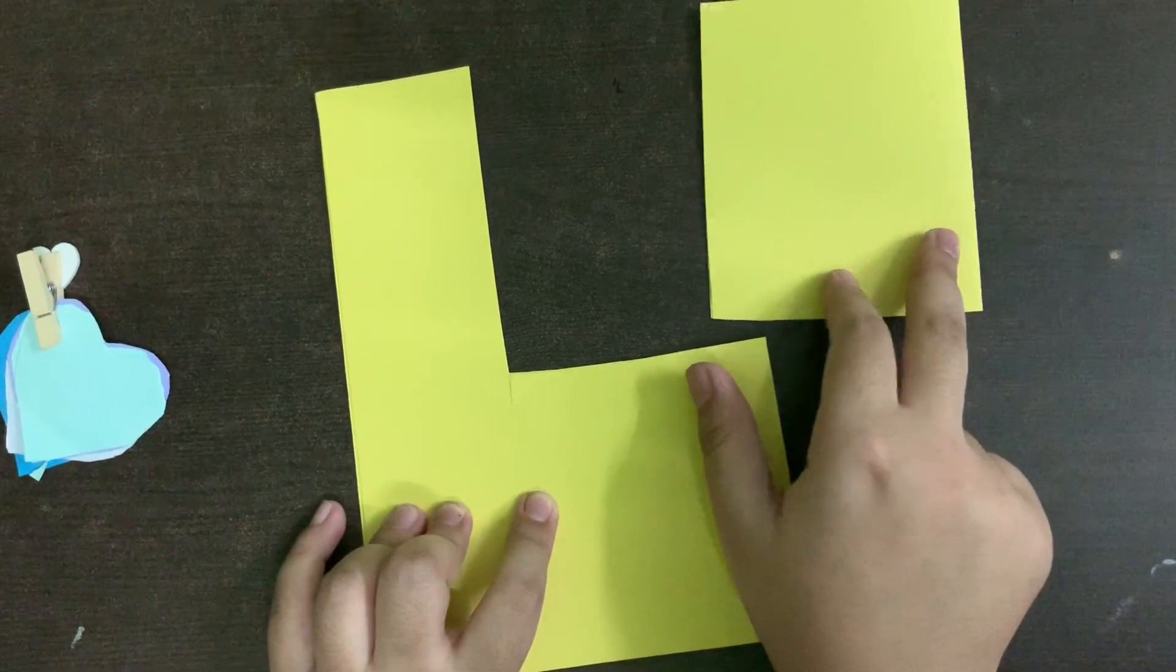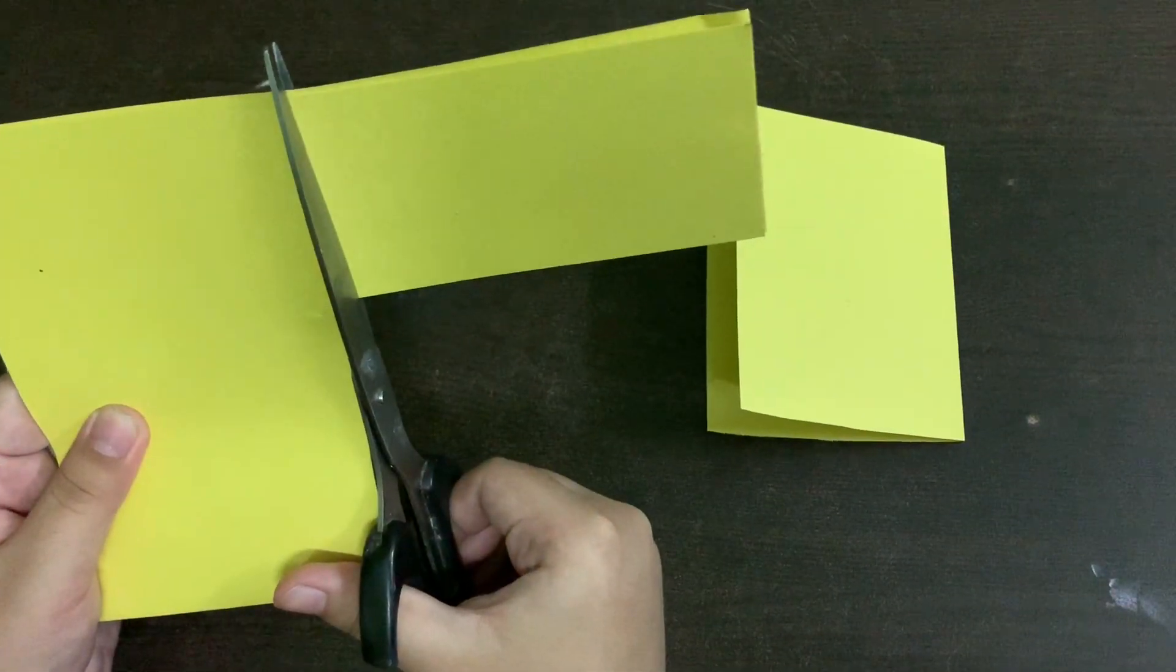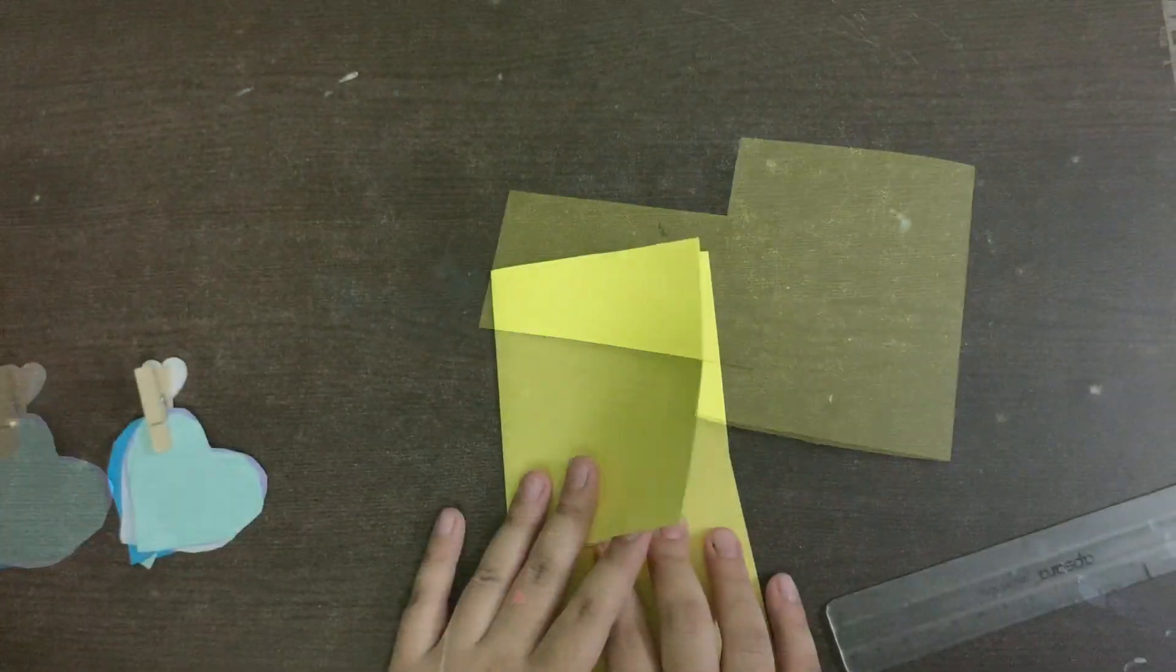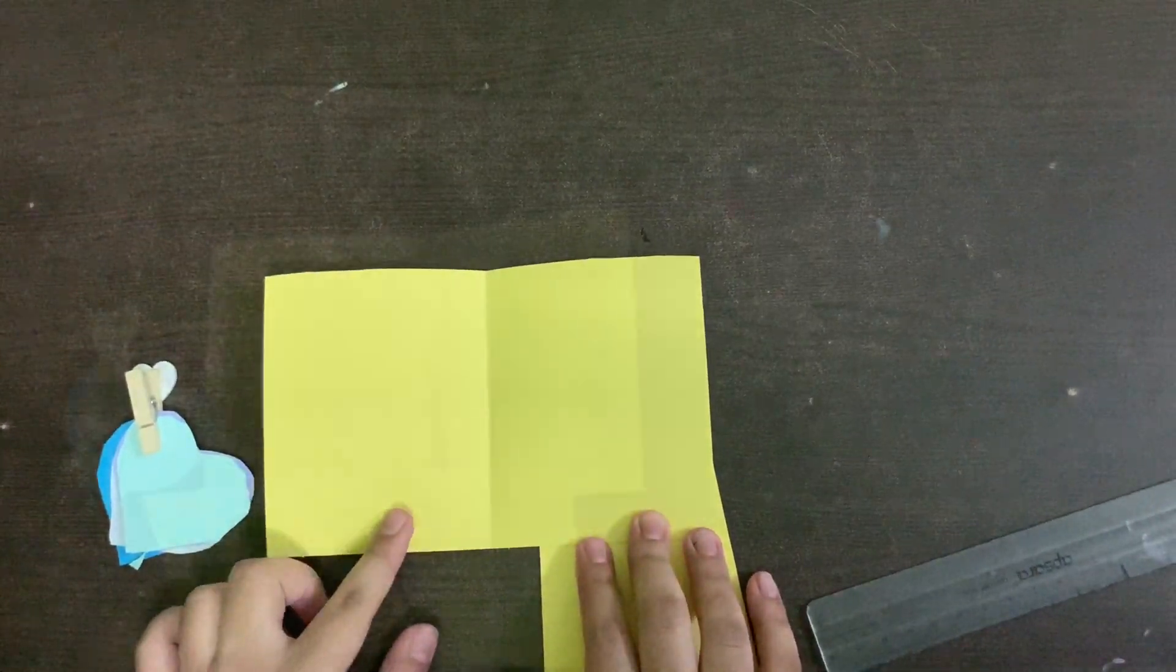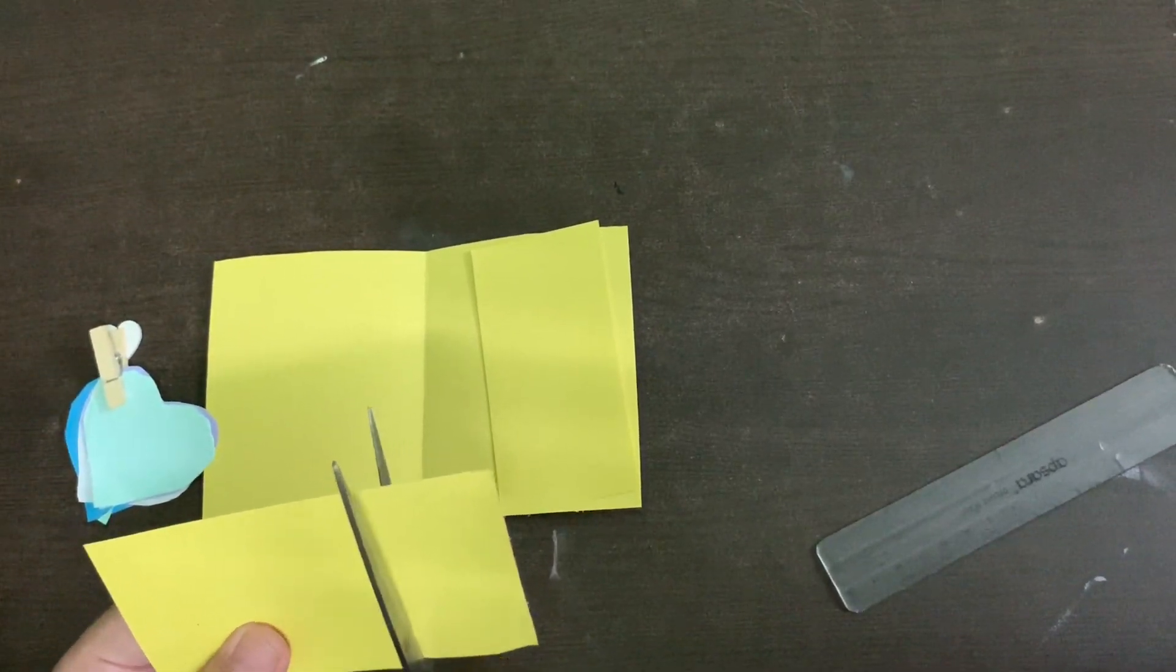Then you need to cut it and give it a shape like this. After cutting this, you need to cut this part. Then you need to open this card and cut a small piece out of one of the strips.